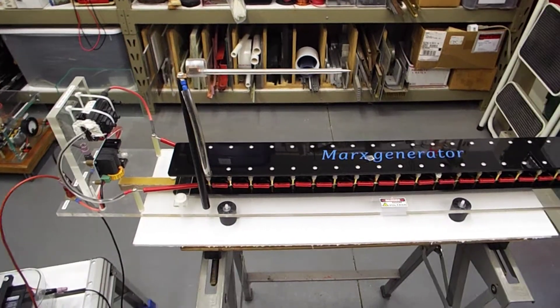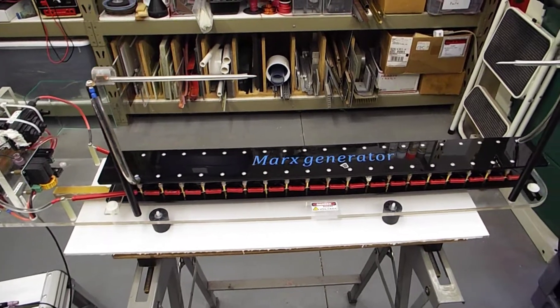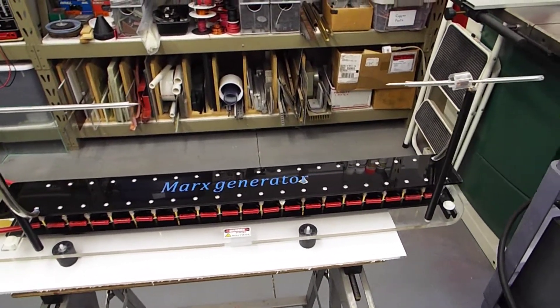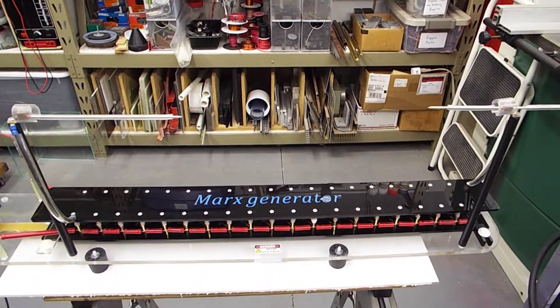This is an overview of my Marx generator. It's 20 stages, so it has 20 capacitors and 40 resistors, and you can see the spark gap on the top.